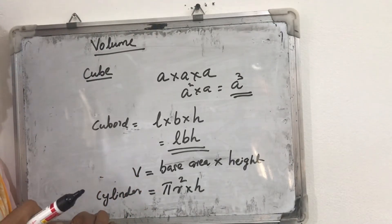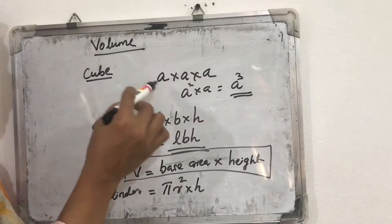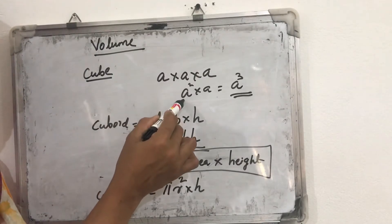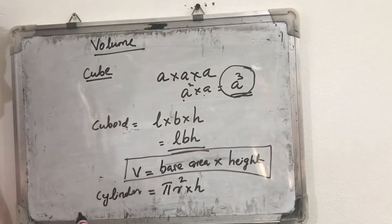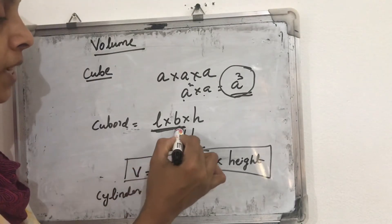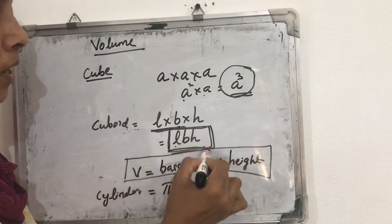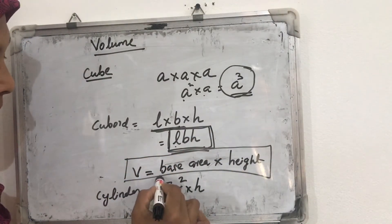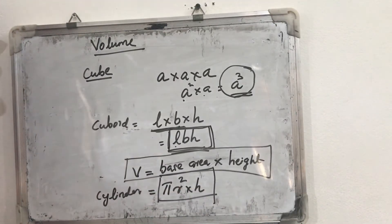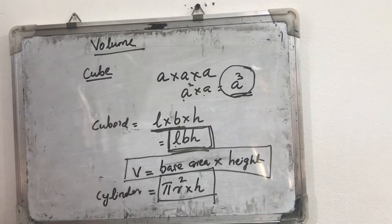So the general equation for volume of any three-dimensional shape is: base area × height. For a cube: base area = a², so volume = a³. For a cuboid: base area = lb, so volume = lbh. For a cylinder: base area = πr², so volume = πr²h. Using these formulas we can find the volume of all three shapes.